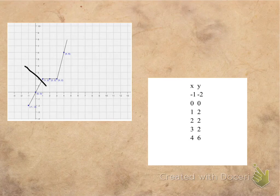This is how your table should look like. The coordinates are x -1, y 2, 0-0, 1-2, 2-2, 3-2, and 4-6.